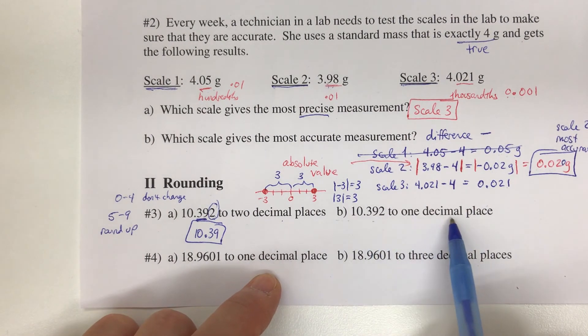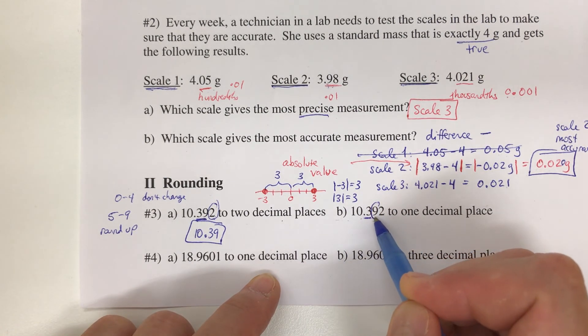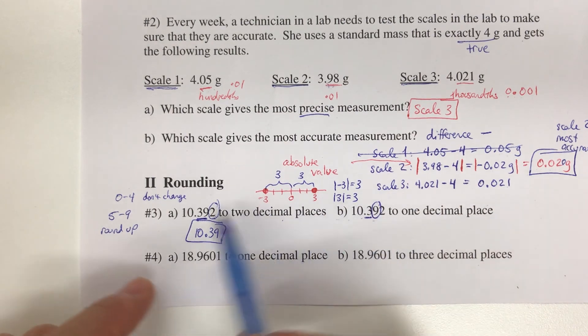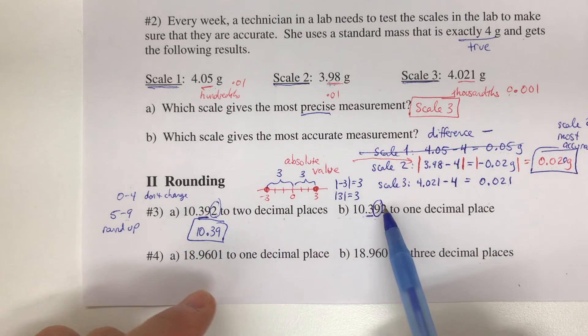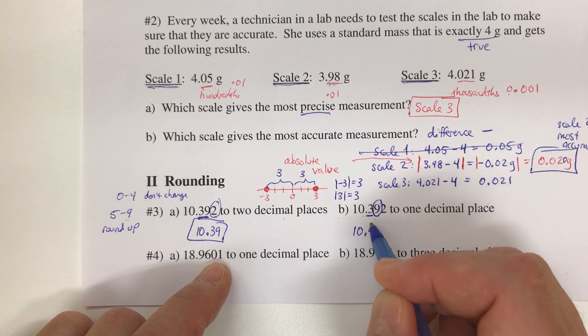If we go to one decimal place, we're looking at 10.3. The next digit is a 9. Since that is between 5 and 9, we have to round up the 3, so we write that as 10.4.